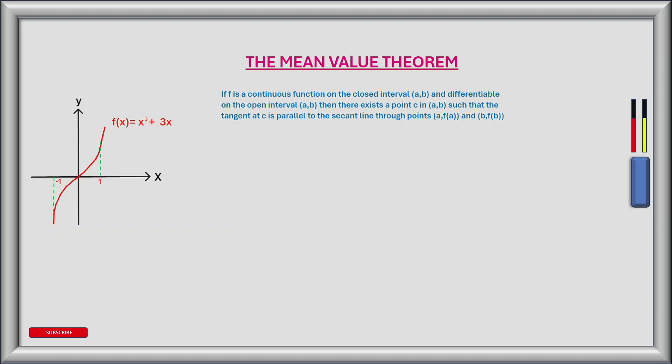So let's take a look at the function f of x which is equal to x cubed plus 3x between the intervals of x equals minus 1 and x is equal to 1, and see if we can apply the mean value theorem. So firstly we need to ask ourselves: does this function between those intervals of minus 1 and 1 conform to the rules laid down by the mean value theorem?